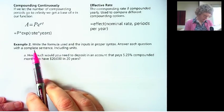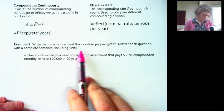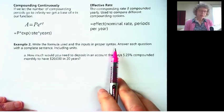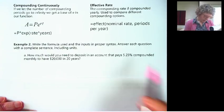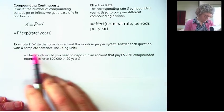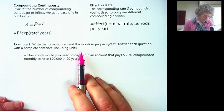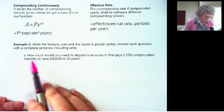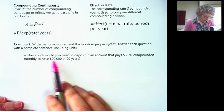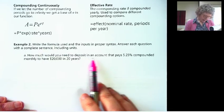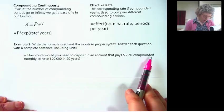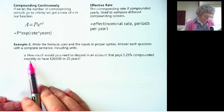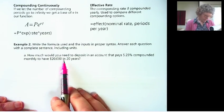Okay, so example two. It says write the formula used and the inputs in proper syntax. So I do want you to write exactly what you're putting into the spreadsheet so I know how you got your answer. Then answer each question with a complete sentence including units. Okay, so A is, how much would you need to deposit in an account that pays 5.25% compounded monthly to have $20,000 in 20 years?